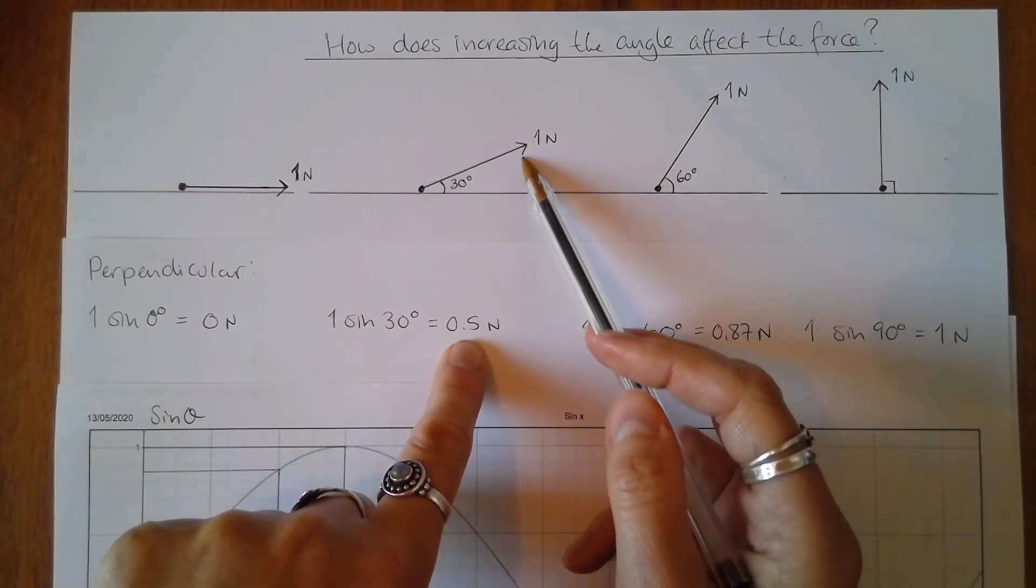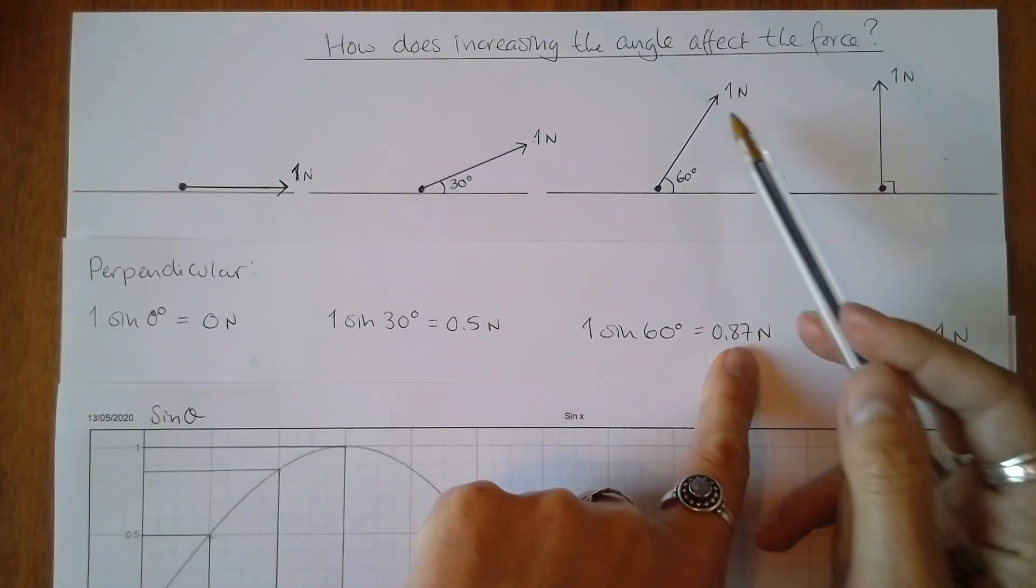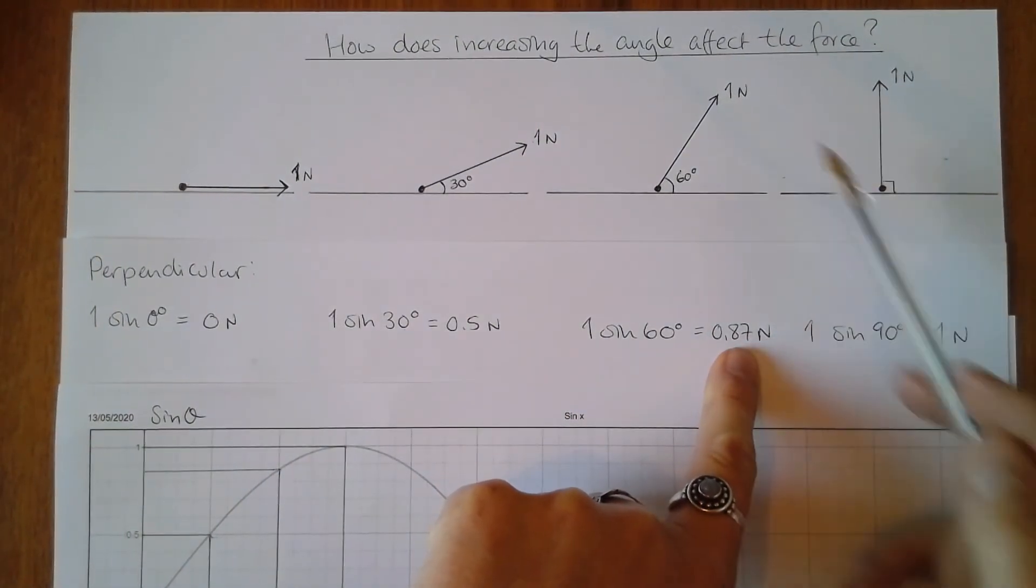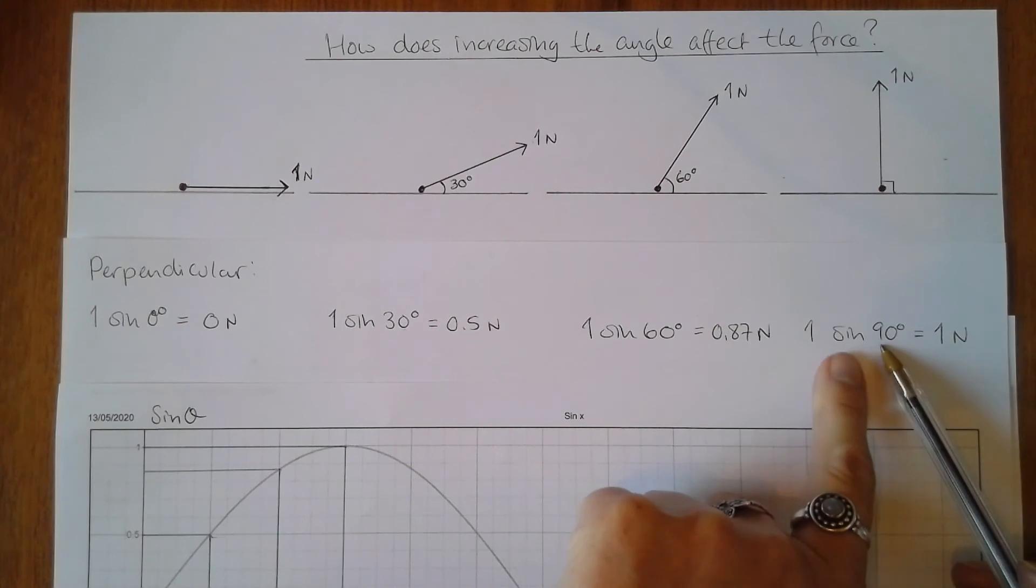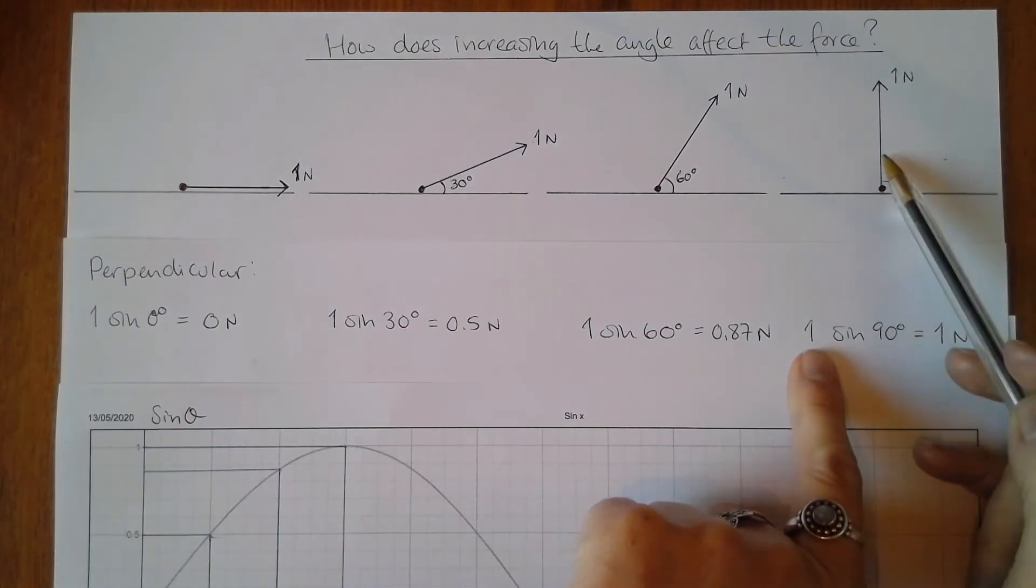And now I increase the angle and a larger component acts in the vertical direction. And increasing the angle again, one sine 90 is equal to one, and so the full force acts in the perpendicular direction.